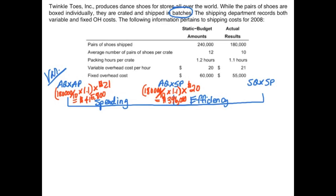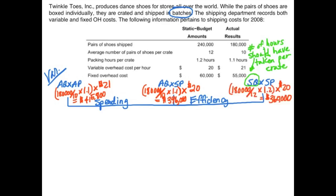On the last peg, we have standard quantity times standard price. Standard quantity asks: what is the number of hours we should have taken per crate? To find standard quantity, we take the pairs of shoes actually shipped divided by 12 pairs of shoes per crate to get our quantity of crates, then multiply by the standard packing hours per crate, then multiply by the standard price of $20, giving us a flexible budget amount of $360,000.